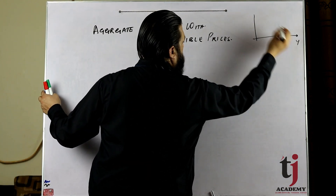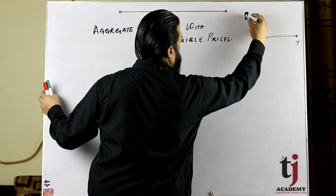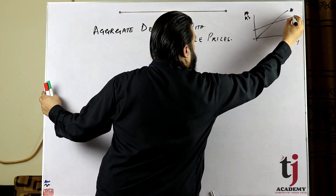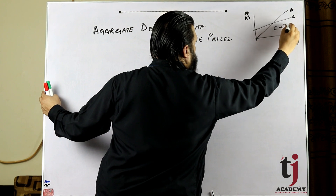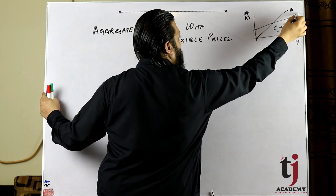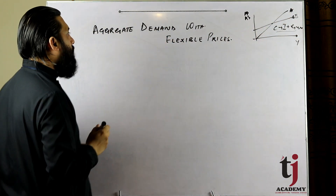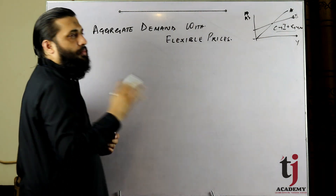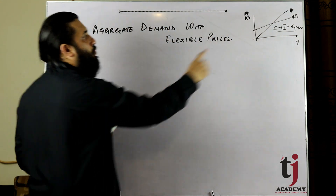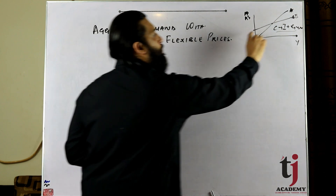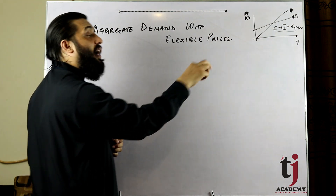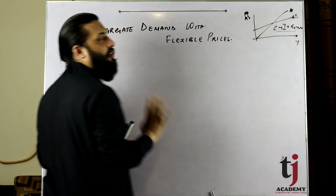Wahan humare paas aggregate demand thi. Us model mein demand ek particular price par given thi - price ke saath demand nahi badalti thi. Demand shift upward ya downward ho sakti thi to price par effect aata tha. Lekin abhi demand par ek hi price - constant price thi.